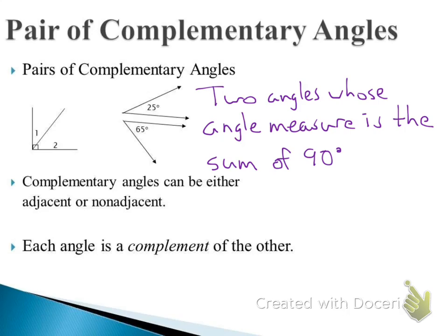We have to make sure we're using the right vocabulary — two angles whose angle measure has a sum of 90 degrees. So I add two angles and they equal 90 degrees. It's not one angle that is 90 degrees; that's a right angle. These are a pair of angles — two of them — that add to 90 degrees.